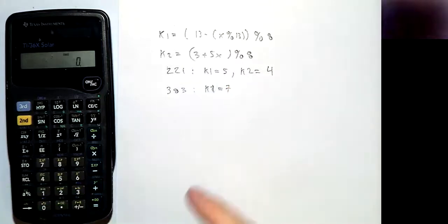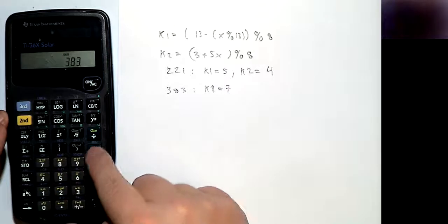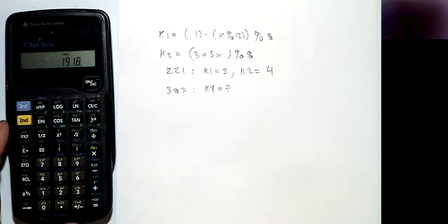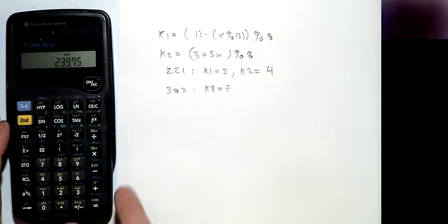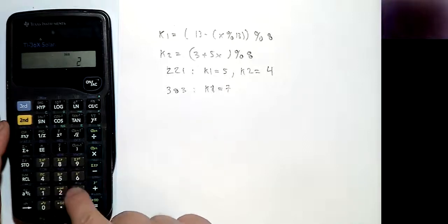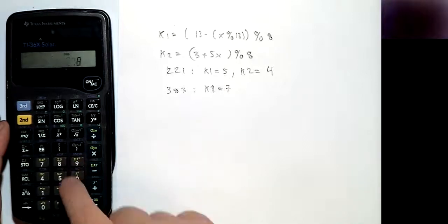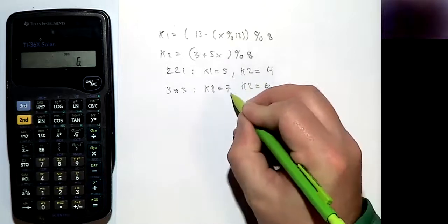So for k2, we're going to have 383 times 5 plus 3, and I divide that by 8. So subtract 239 times 8, and then that's going to give us 6.